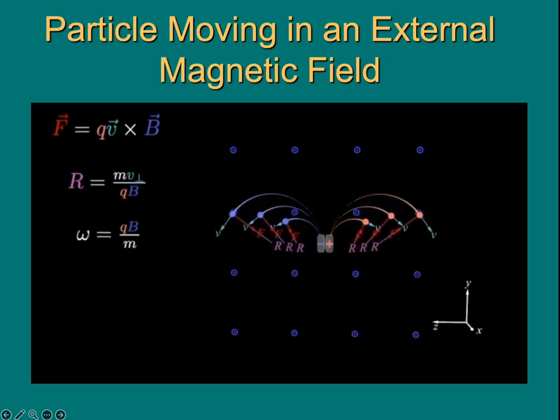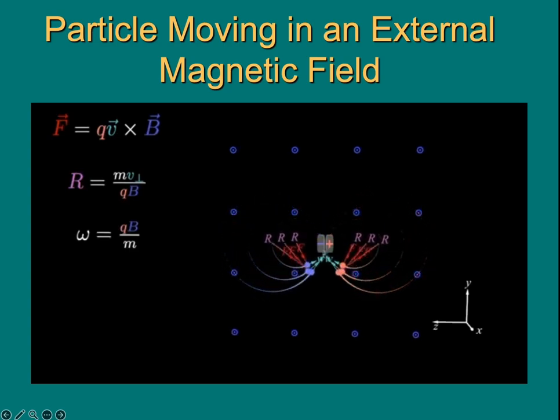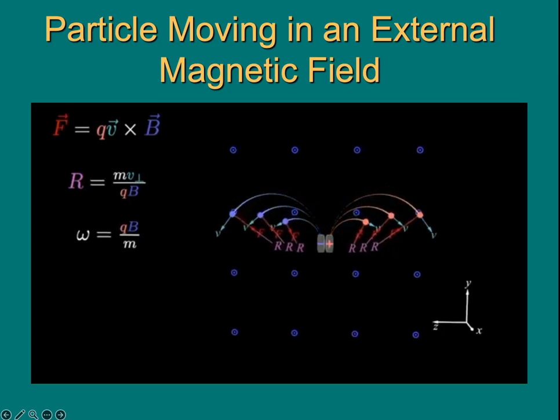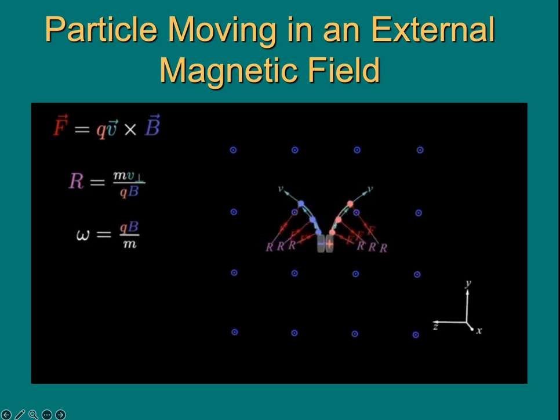Speed also affects the radius of circular motion. However, the time it takes is not affected by the speed. The frequency of orbits only depends upon the charge, the magnetic field strength, and the charge's mass.